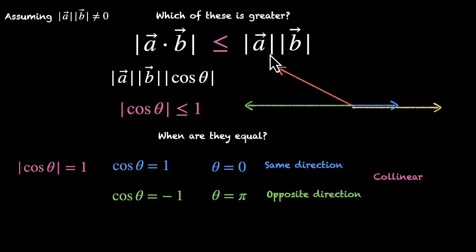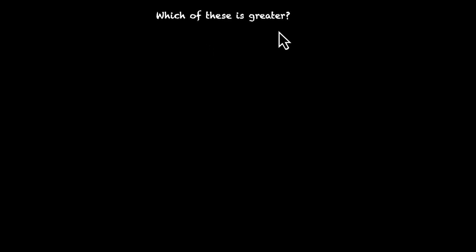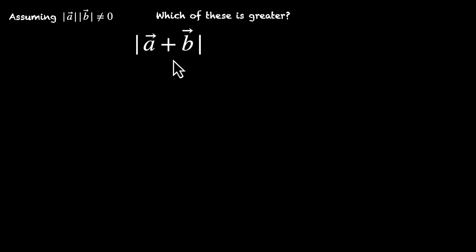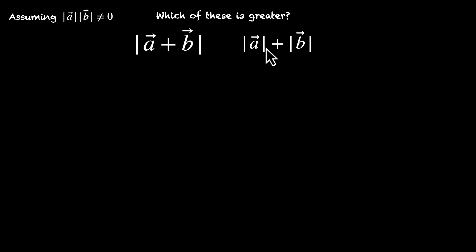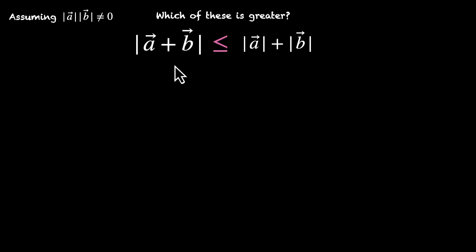So that was about the product. Let's talk about the sum. Again the same question: which of these is greater? We have to assume non-zero vectors. On the left-hand side we have mod of vector A plus vector B — the mod of the sum. On the right-hand side we have the sum of the mods: mod of vector A plus mod of vector B. So which of these two sides is greater? Pause the video and think about it. The answer is, in this case as well, the right-hand side is greater than or equal to the left-hand side.